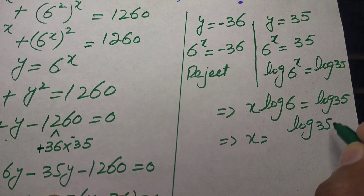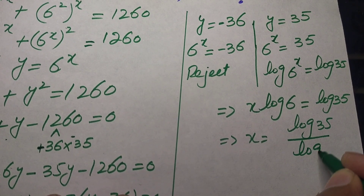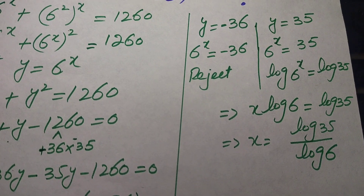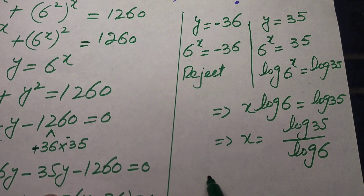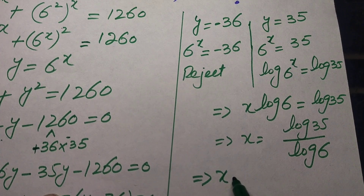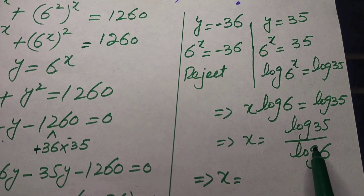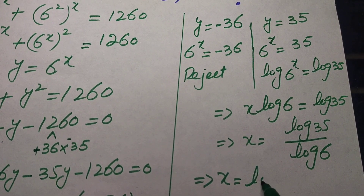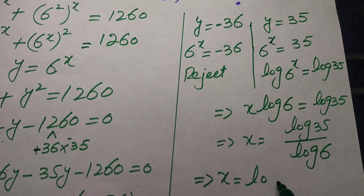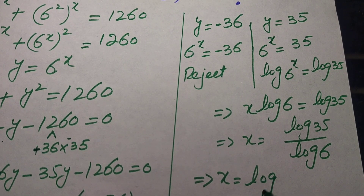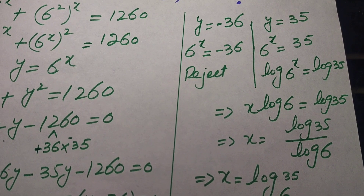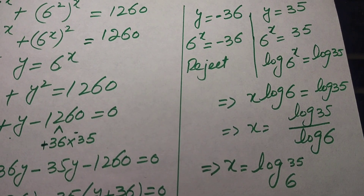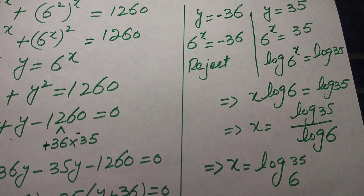Dividing both sides by log 6, we obtain x equals log 35 over log 6. Applying the change-of-base property, this is equal to log base 6 of 35, and this is our final answer. Thank you so much for watching this video.